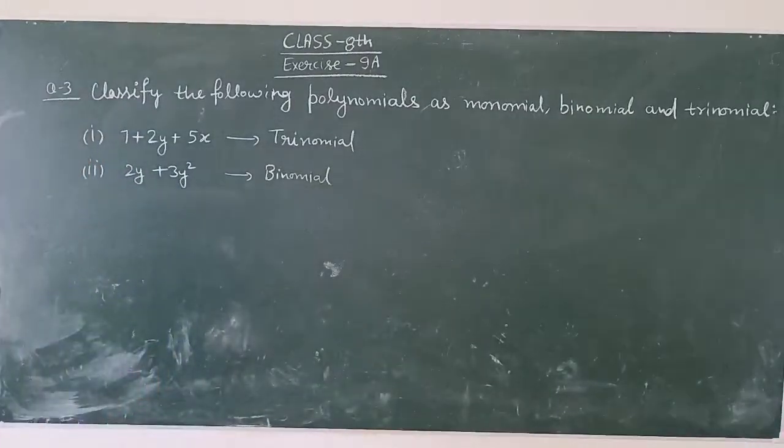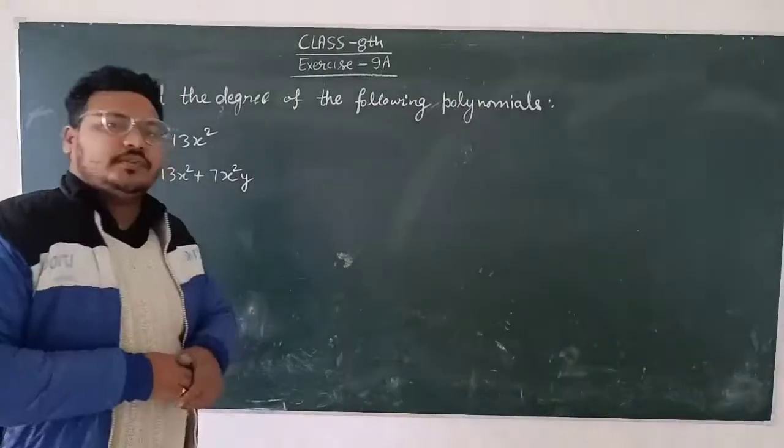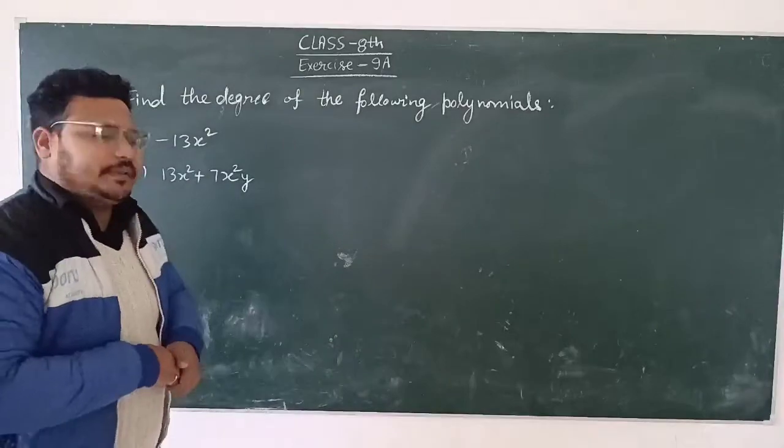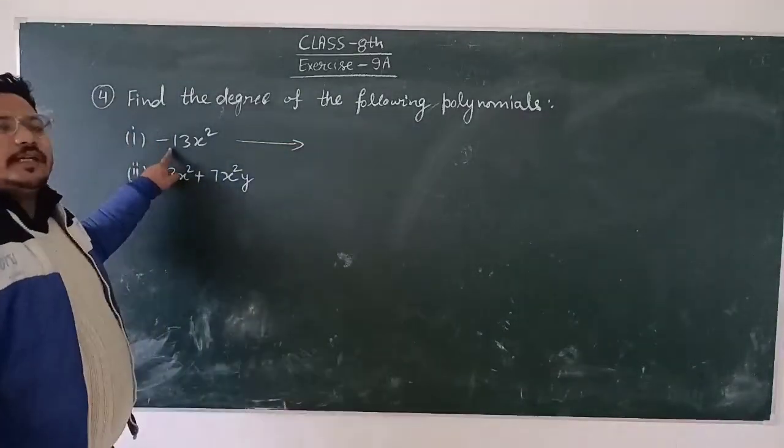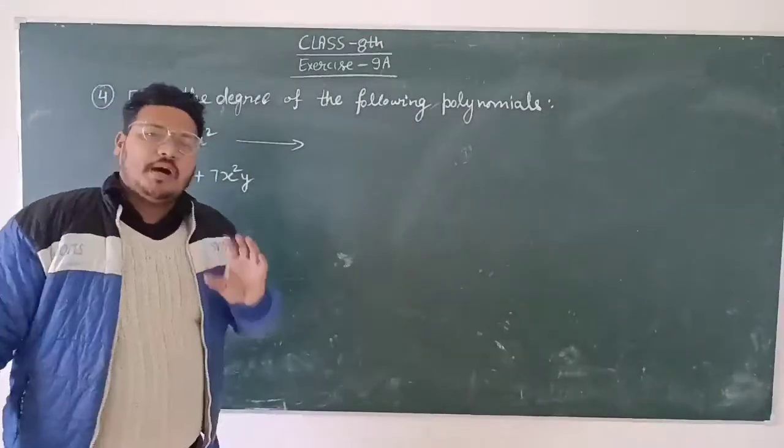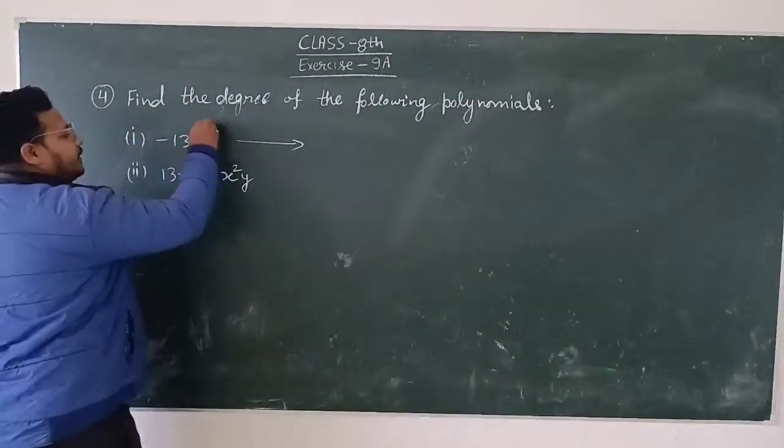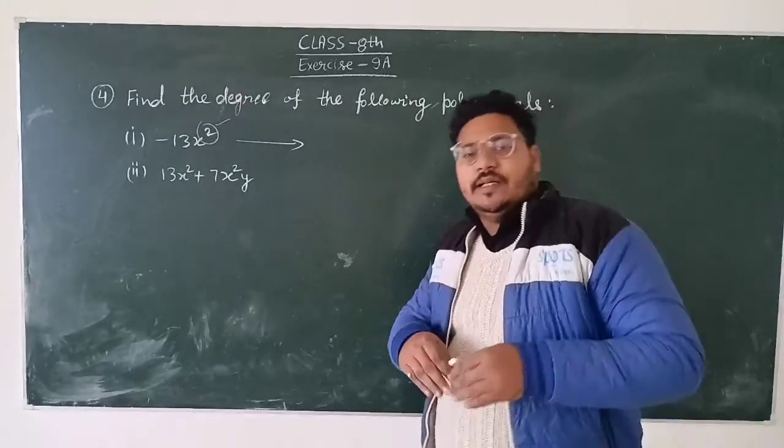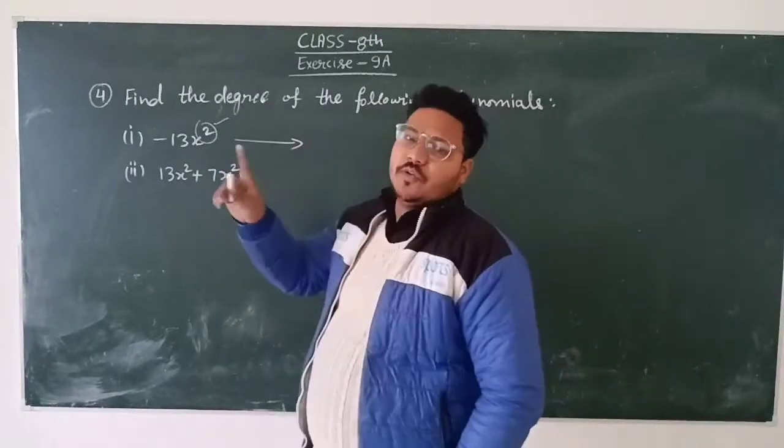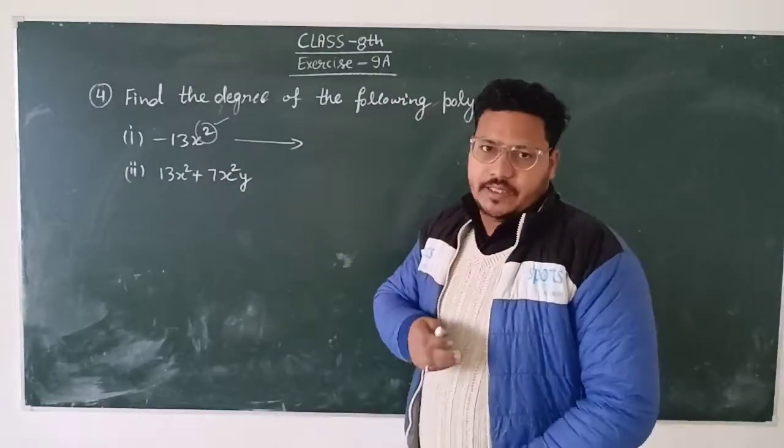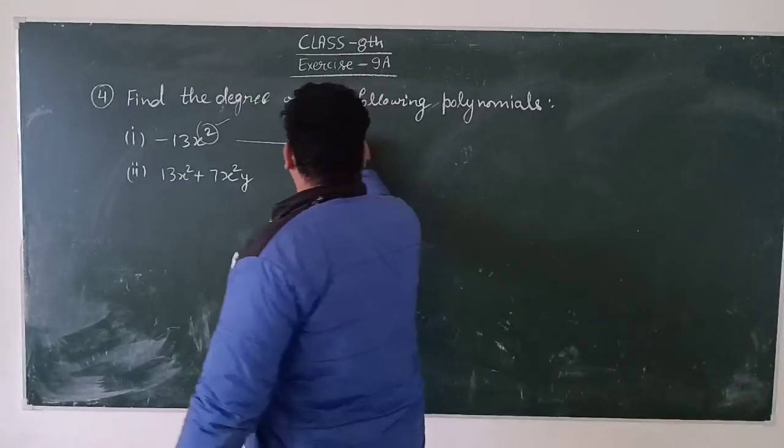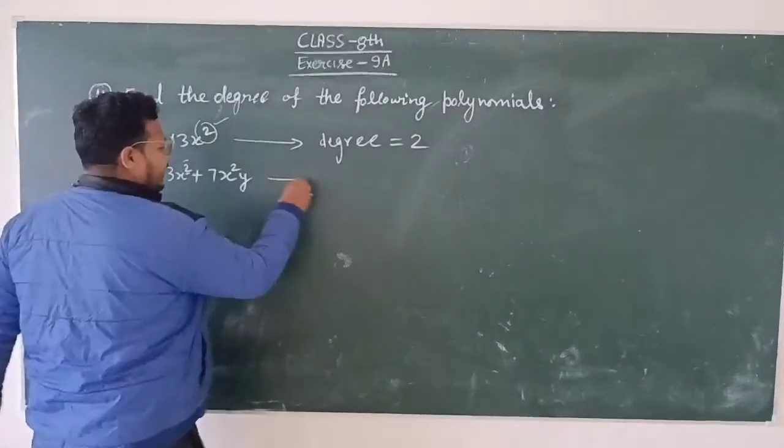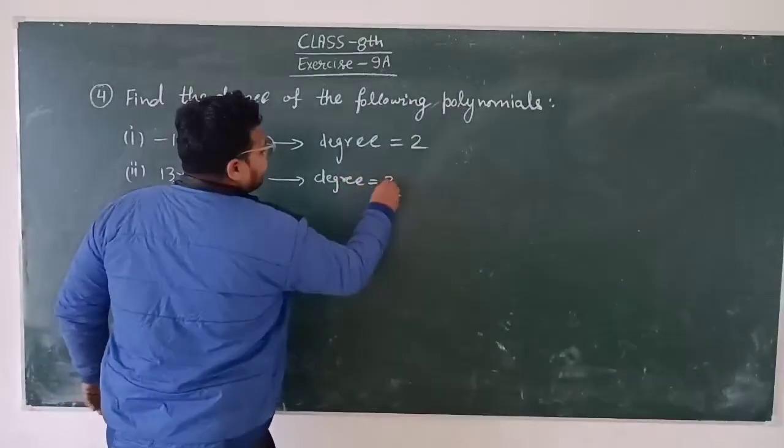So binomial the maximum power. So the maximum power, so the degree. It means decreasing order. So decreasing order. So the degree is 2. Clear.